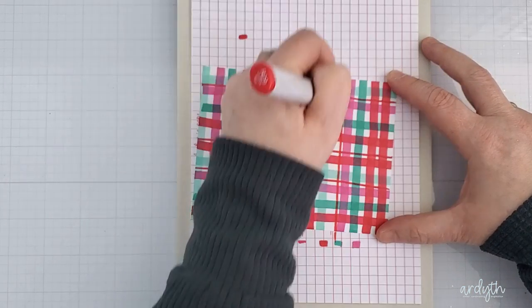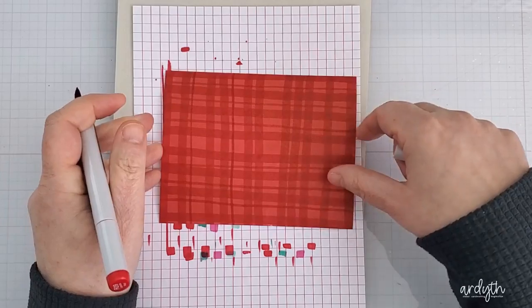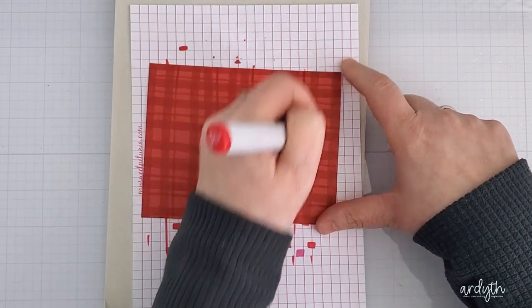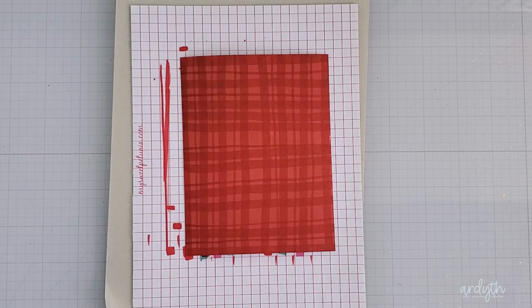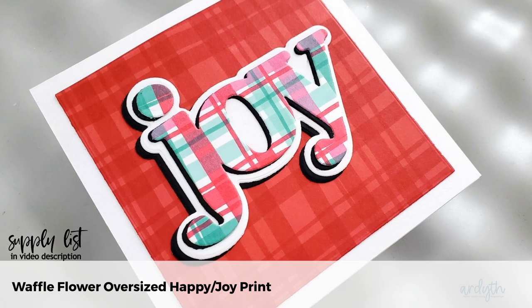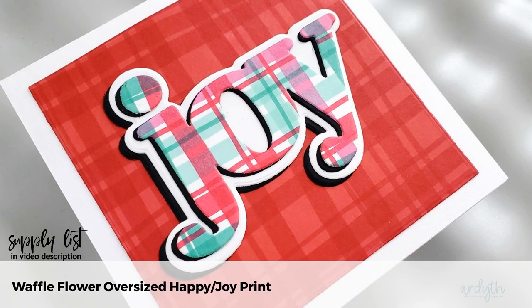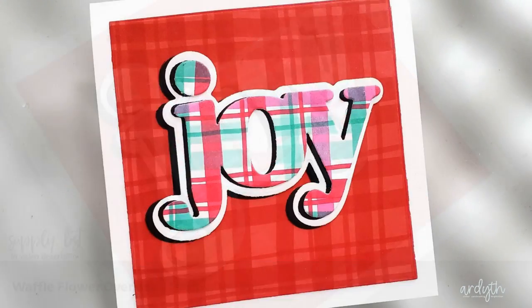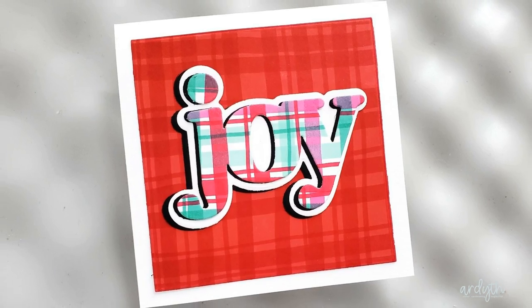You can also do a tone-on-tone plaid. Here's a rock and red panel and a dark red marker. Same thing with the thicker and thinner stripes, but this time just one color. Since I've got so many cards today, I'm going to focus on the plaid techniques rather than showing you how I finished the cards, but I will list the supplies I used and as always there's links below in the video description. If you have any specific questions, just leave me a comment and I'll get back to you. This is just a stacked up Waffle Flower joy sentiment with the two Copic plaids.